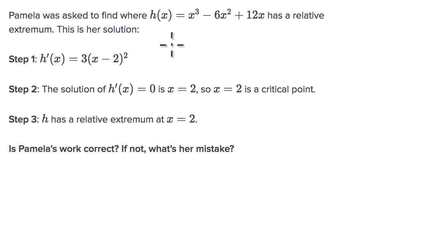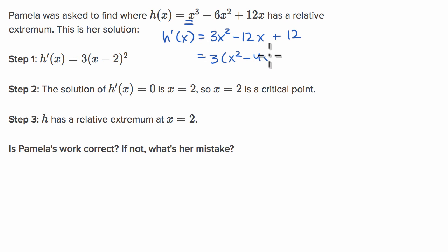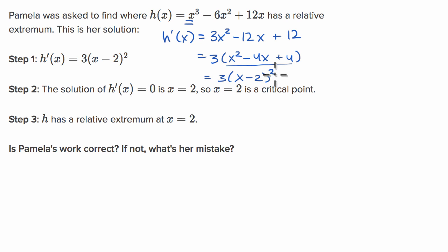I'm just going to try to do it again in parallel, so first let me just take the derivative here. So h prime of x, using the power rule multiple times, is going to be three x squared minus 12x plus 12. You can factor out a three, so it's three times x squared minus 4x plus four, and this is indeed equal to three times x minus two squared.